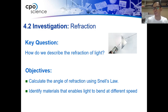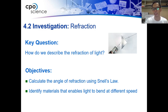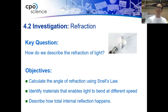Do these materials allow the light to travel at the same speed, or do they make the light move slower when the light passes through them? Next objective: describe how total internal reflection happens.